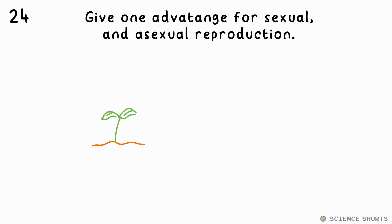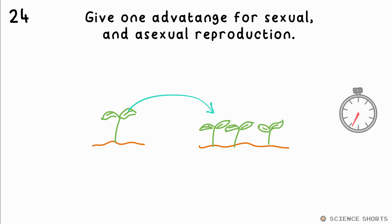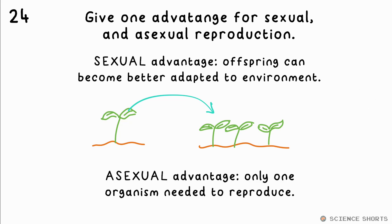What is an advantage for sexual and asexual reproduction? The offspring of organisms that reproduce sexually can be better adapted to their environment. Asexual reproduction results in clones being made, but the benefit is that only one organism is needed.